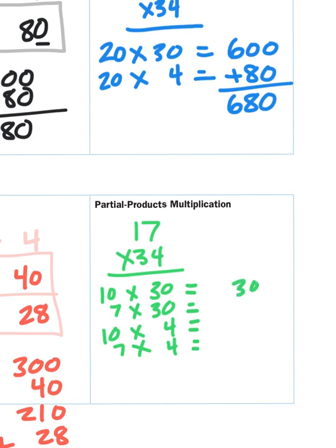So 10 times 30 is 300. 7 times 30 is 210. 10 times 4 is 40. 7 times 4 is 28. I'm going to add all those together and I get the same total product as I did with the partitioning rectangles, 578.